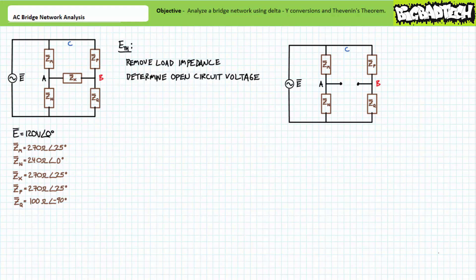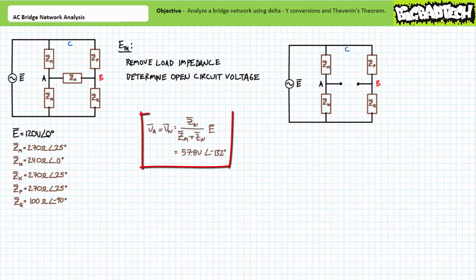First we remove our load impedance of interest — impedance element ZX between nodes A and B — and determine the open-circuit voltage between A and B. Removing ZX fundamentally changes the complex bridge circuit into a pure series-parallel circuit: ZM and ZN are perfectly in series, and that series path is in parallel with the series path formed by ZP and ZQ. Nodal voltage VA is the voltage across ZN; applying the AC voltage divider rule gives VA = 57.8 volts at negative 13.2 degrees.